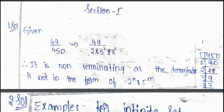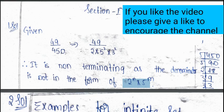So, I will not agree with Geeta because 49 by 450 can be expressed as 49 by 2 into 5 square into 3 square. By prime factorization method, clearly denominator is not in the form of 2 power of n, 5 power of m. Therefore, 49 by 450 is not a terminating decimal. It is a non-terminating decimal. So, I will not agree with Geeta.